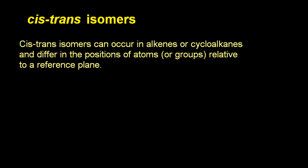So these used to be called geometric isomers, but in the new syllabus they are cis-trans isomers. Let's look at the definition from the syllabus. Cis-trans isomers can occur in alkenes or cycloalkanes and differ in the positions of atoms or groups relative to a reference plane.